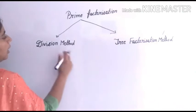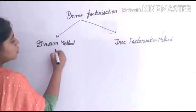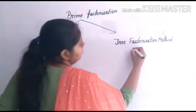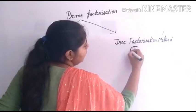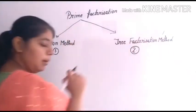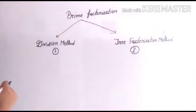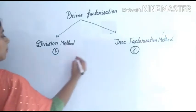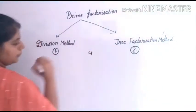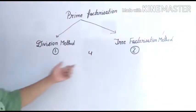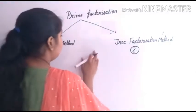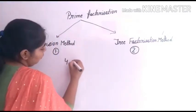First one is the division method. Second part is the tree factorization method. I have given this number 4. What do we do? Prime factorization of 4.